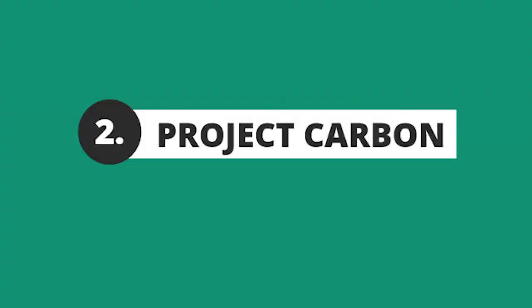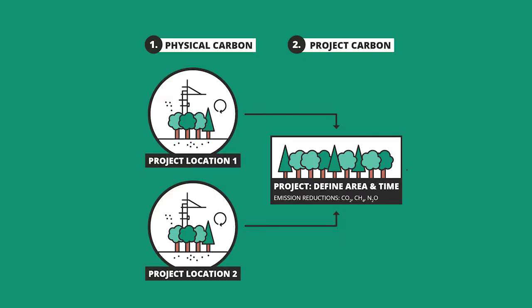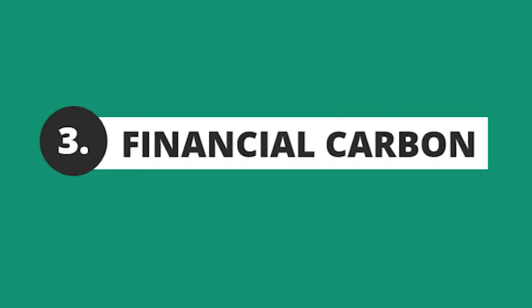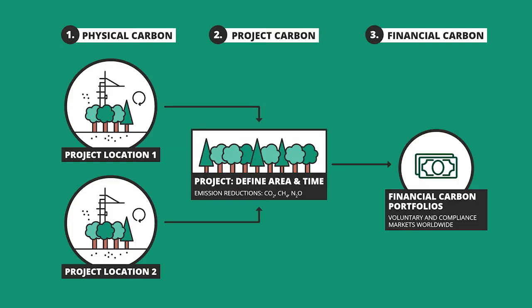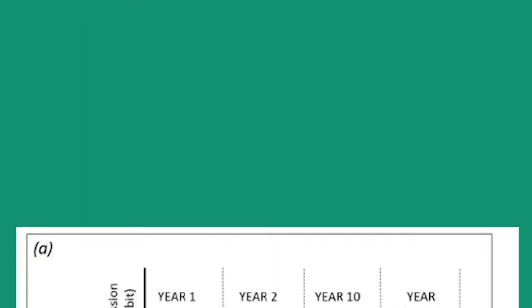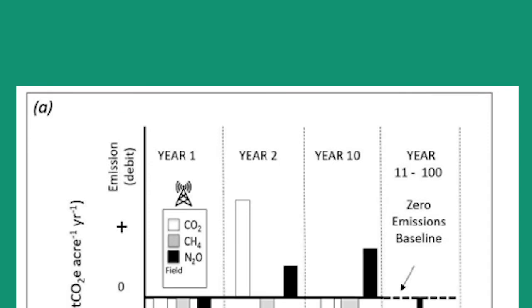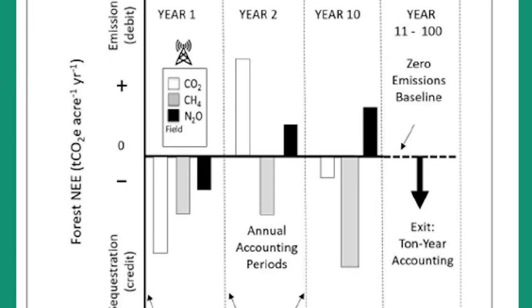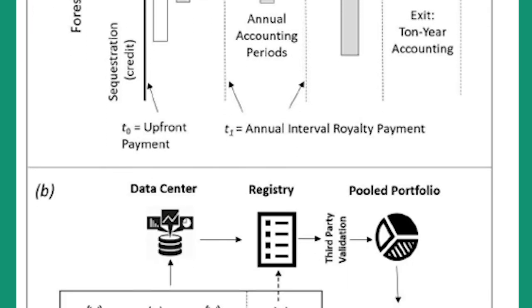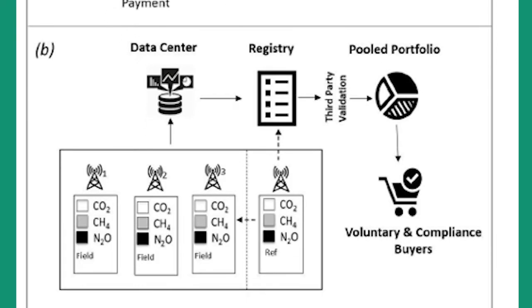Step two: compile project carbon — the amount of carbon stored across the spatial and temporal domain of the project. Step three: transform project carbon into financial carbon. Financial carbon products are tons of CO2 equivalent, monetized, and placed in portfolios representing diverse ecosystems, and available for sale to consumers and voluntary and compliant buyers.